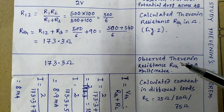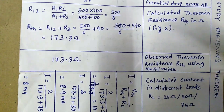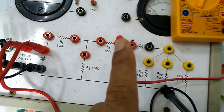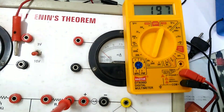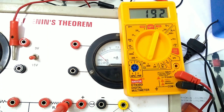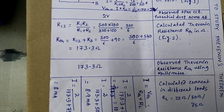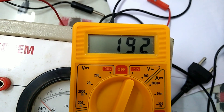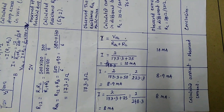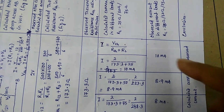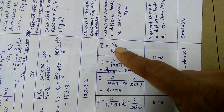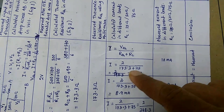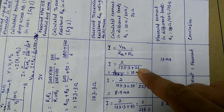This is the calculated value. You observe the equivalent resistance experimentally — if you observe it by means of a multimeter, the Thevenin resistance is equal to 192 Ohm, very nearly 175, with a slight difference in the observed resistance. Now you calculate the current. Our aim is to calculate the current; if the calculated value of current matches with the experimental value, then Thevenin's theorem is verified.